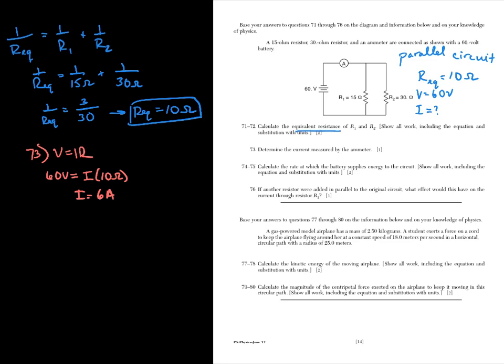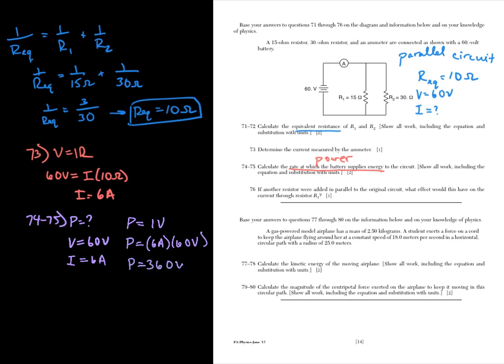Number 74 to 75, we need to calculate the rate at which the battery supplies energy. This is power. Any rate of energy is power. We've got to calculate power. Voltage they give us is 60 volts. And the current is 6 amps. So this is an example where answers have to follow up one after the other. If you get number 71 to 72 wrong, but you do everything else correctly, then you can still get all those points. Just minus the one point from 71 to 72. And so you can do this in a number of ways, but I like to use P equals IV because it's simpler. So 6 amps times 60 volts, and you should get 360 watts as your answer.